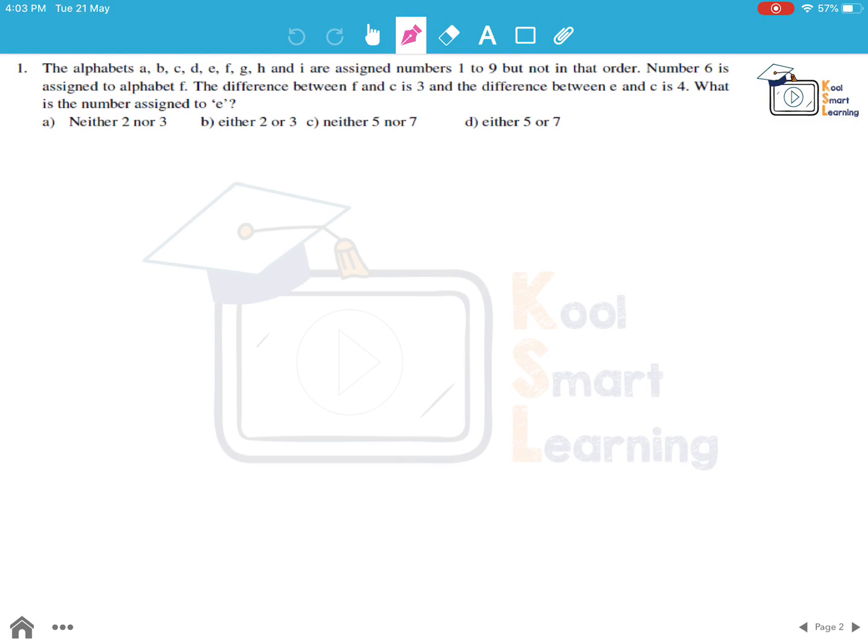The alphabets A, B, C, D, E, F, G, H and I are assigned numbers 1 to 9 but not in that order. Number 6 is assigned to alphabet F. The difference between F and C is 3 and the difference between E and C is 4. What is the number assigned to E?